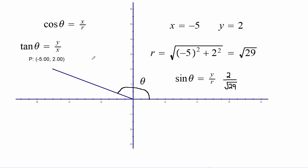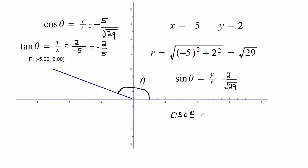Cosine theta was X over R, and X is negative 5, so that would be negative 5 over the square root of 29. Tangent is Y over X — Y is 2, X is negative 5 — so the result is negative 2 over 5. For cosecant theta, that's the reciprocal of the sine, which is the square root of 29 over 2. That's how we complete this calculation.